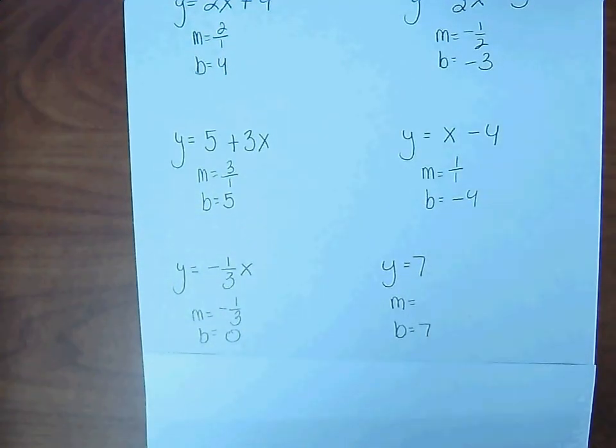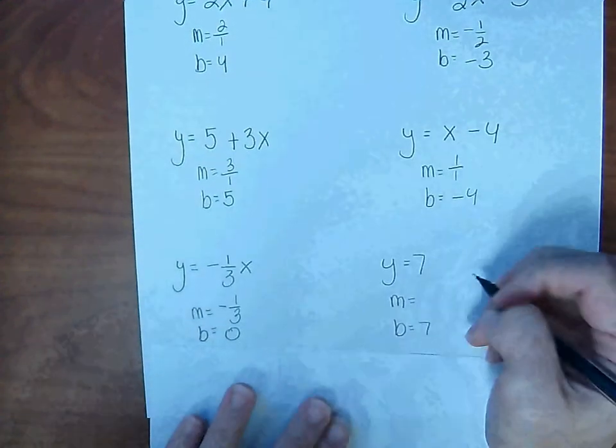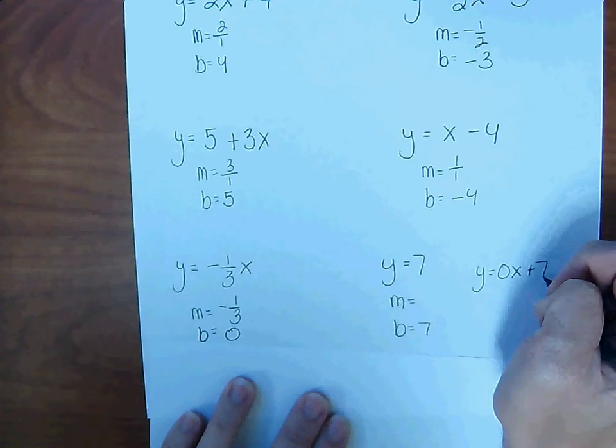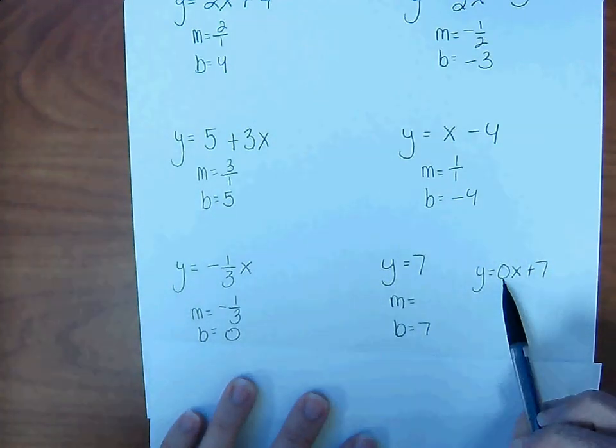And what makes something disappear is when it's being multiplied by 0. So this really means y = 0x + 7. So then the slope is 0.